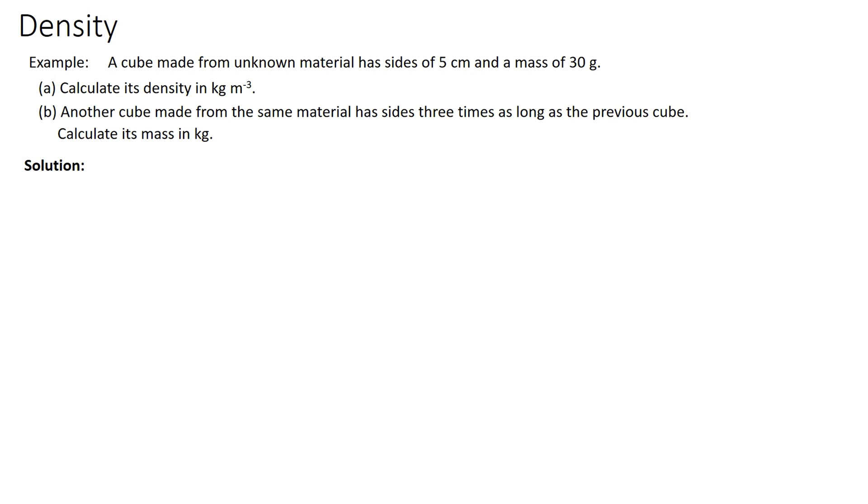For part (a), the volume is 5cm times 5cm times 5cm and since they want us to leave the unit in kg per meter cube, we have to convert the parameters into kg and meters. Therefore we have 0.03 kg over 0.05 meters times 0.05 meters times 0.05 meters and we will get the answer is 240 kg per meter cube.